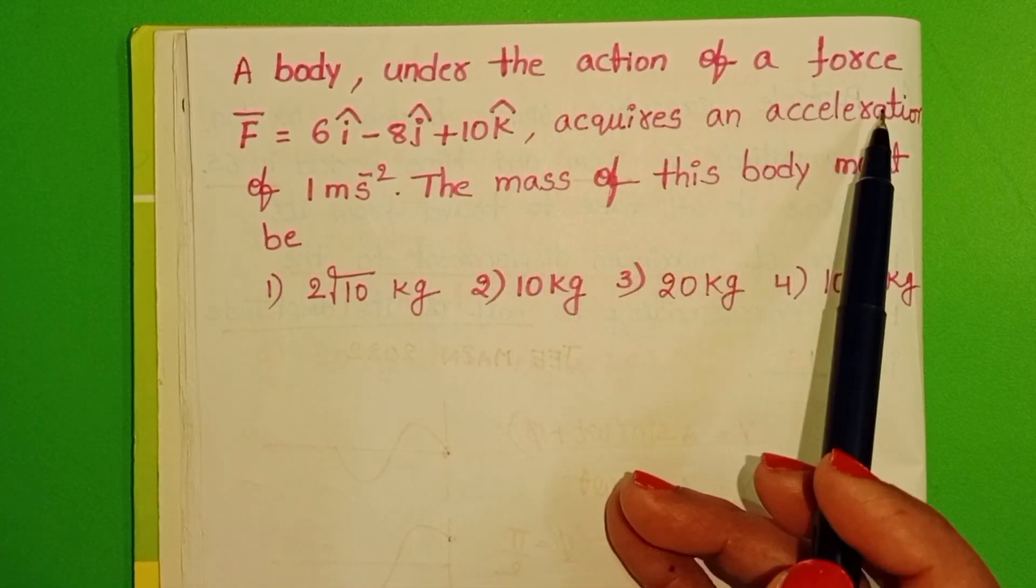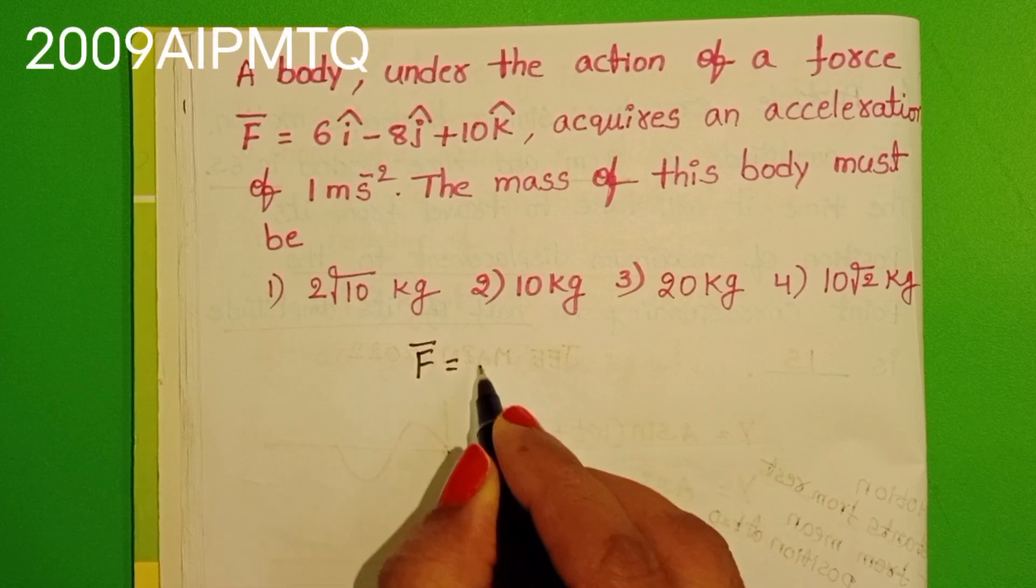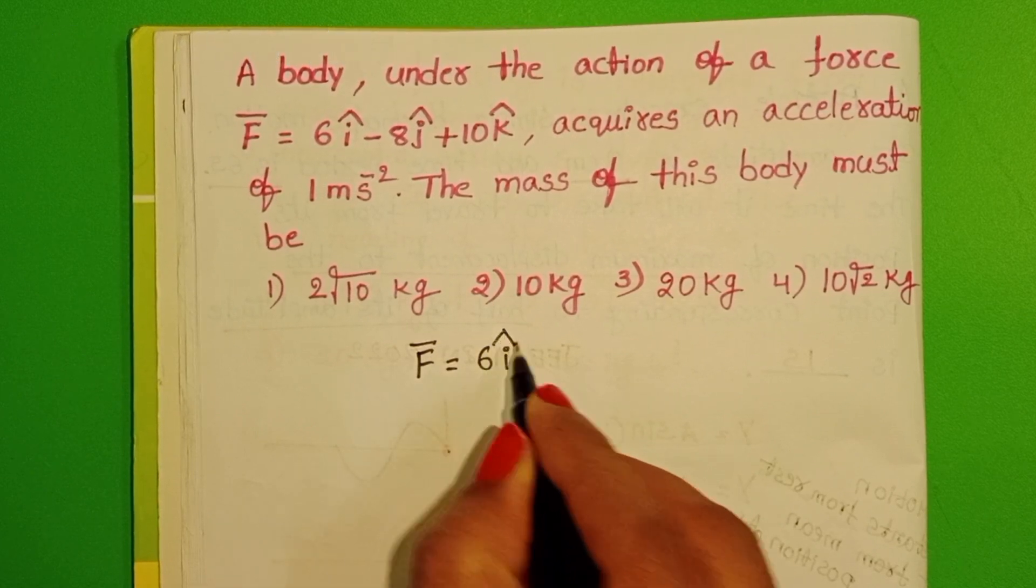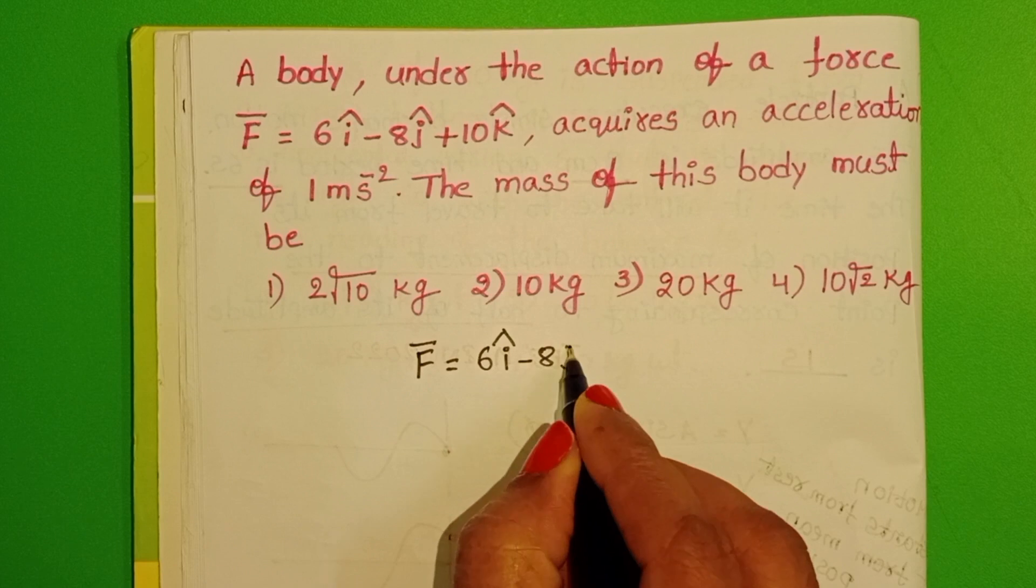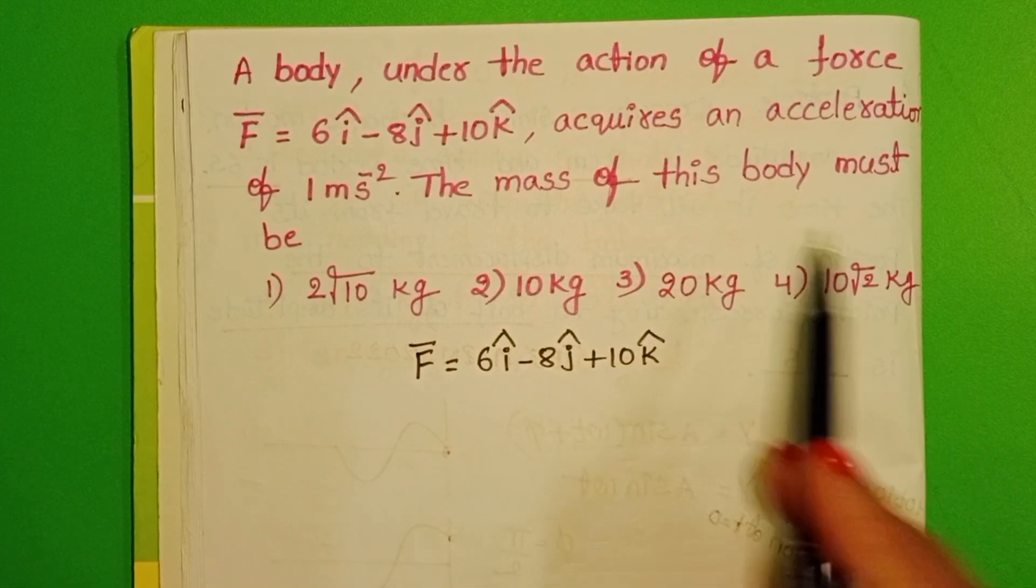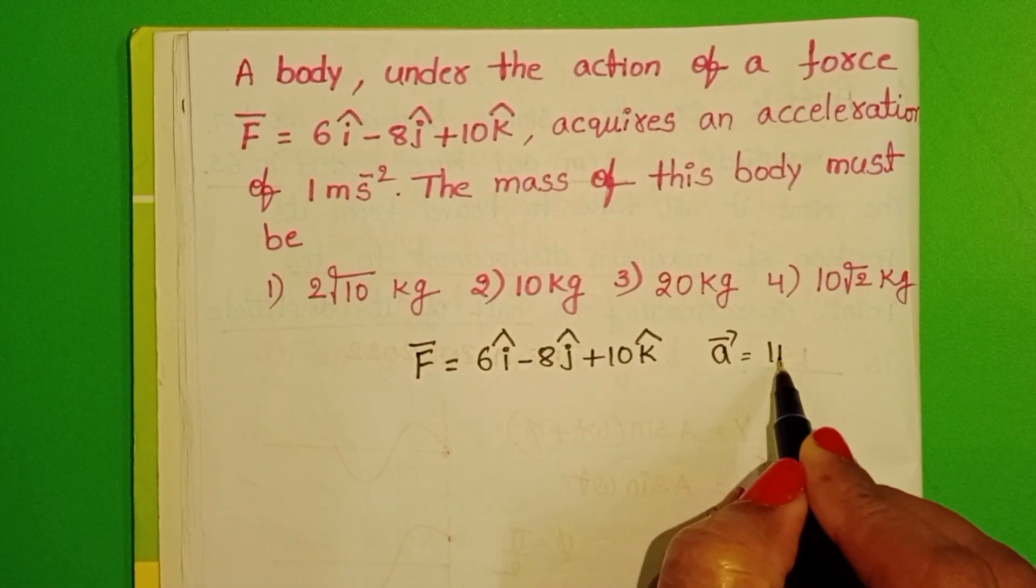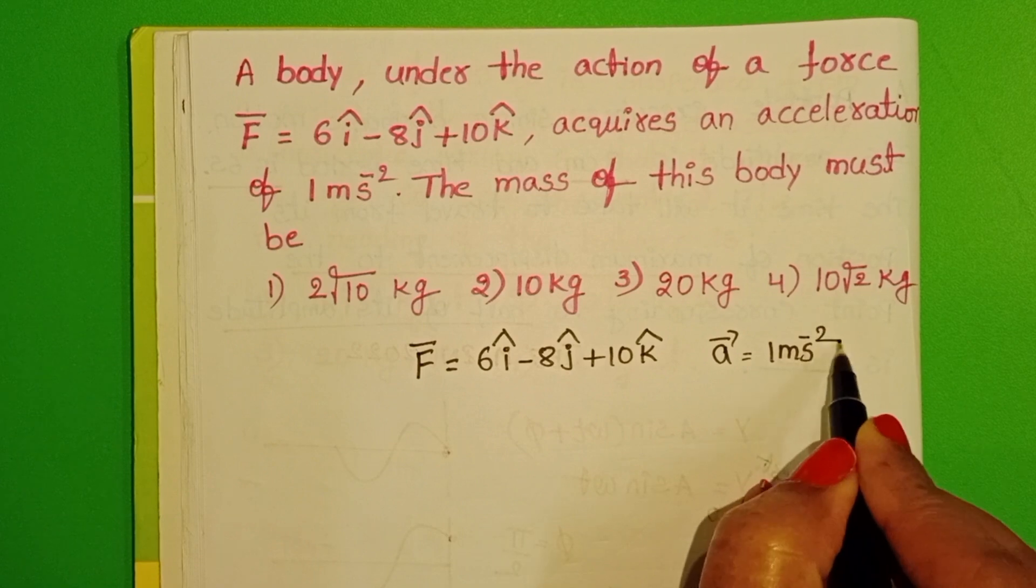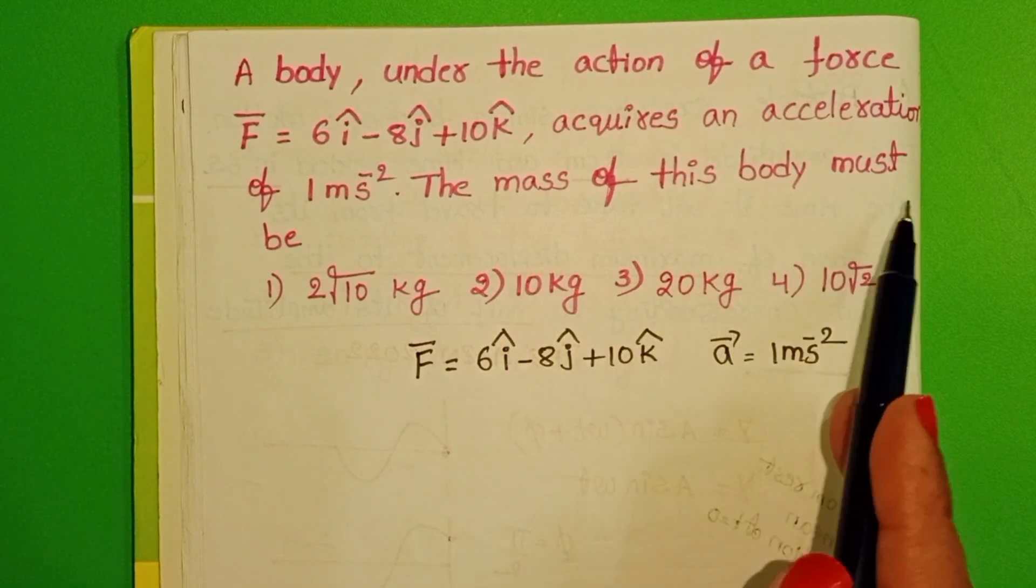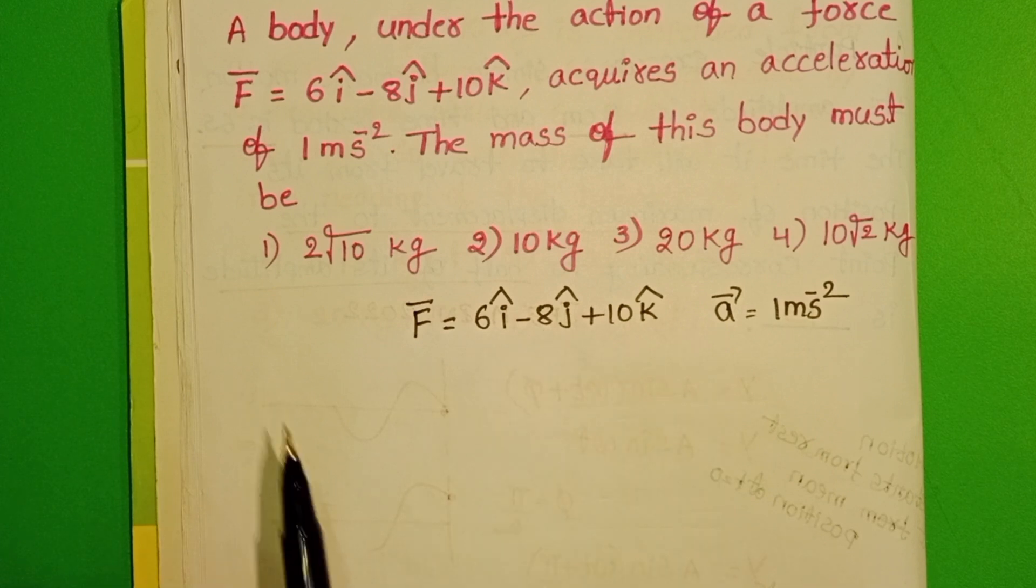A body under the action of a force, given force F bar equals 6i cap minus 8j cap plus 10k cap, acquires an acceleration of 1 meter per second square. The mass of this body must be. Here force is in vector representation.